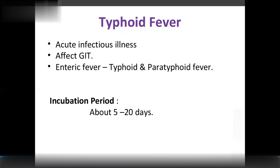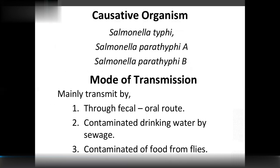Typhoid fever is an acute infectious illness affecting the GIT — also called enteric fever, including typhoid and paratyphoid fever. Incubation period is 5 to 20 days. Causative organisms are Salmonella typhi, Salmonella paratyphi A, and Salmonella paratyphi B. Mode of transmission is the orofecal route — contaminated drinking water by sewage, food contaminated by flies, or roadside food.